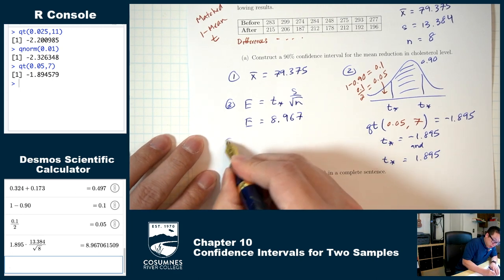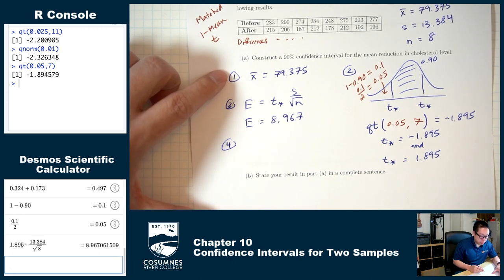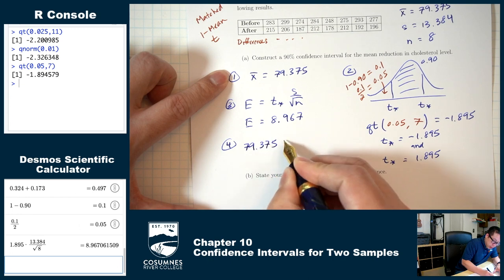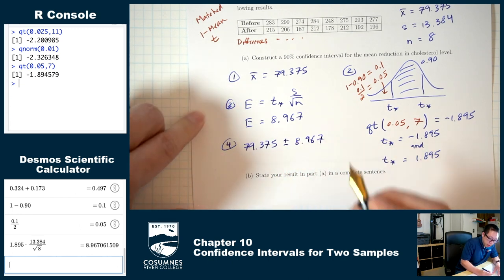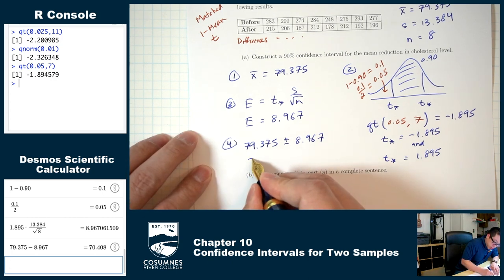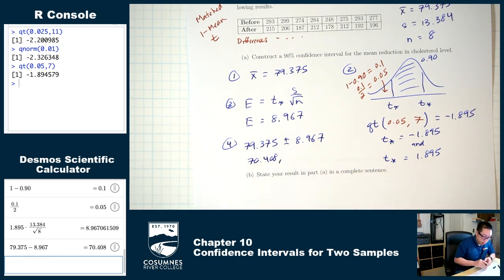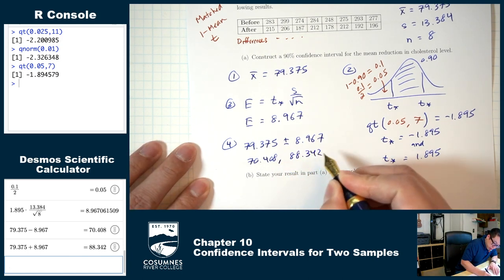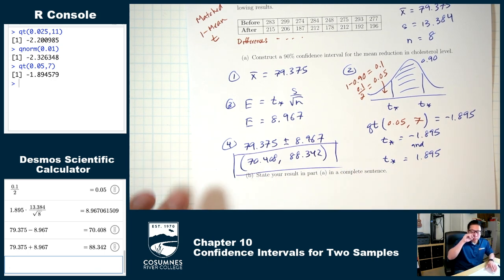Step four: construct the confidence interval. Take 79.375 plus or minus 8.967. The low number is 79.375 minus 8.967 equals 70.408. The upper number is 79.375 plus 8.967 equals 88.342. That is the confidence interval.